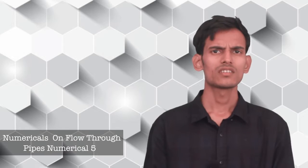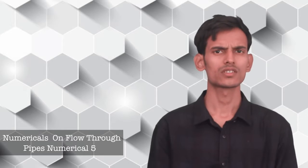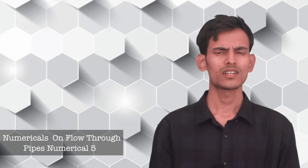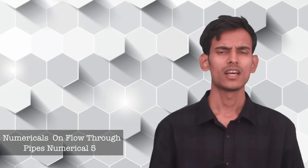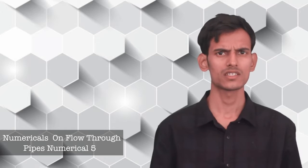We've already seen the theory part of flow through pipes. We've seen different types of losses, major losses, minor losses. Now let's do few numericals and try to understand how the formulas and everything is related in numericals and we'll calculate the losses of head in different cases.